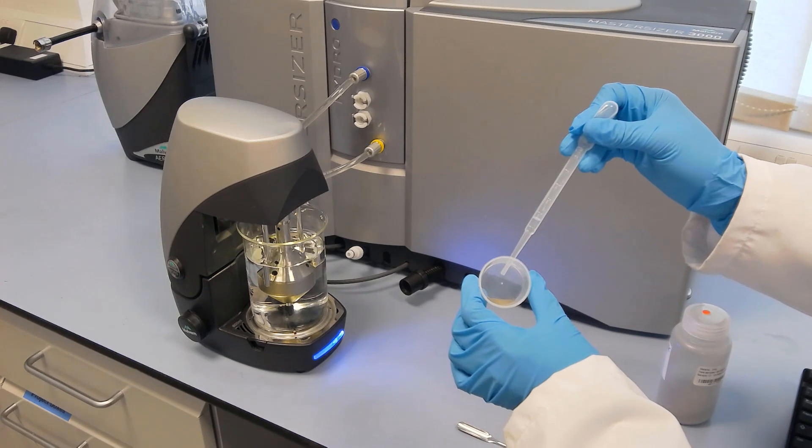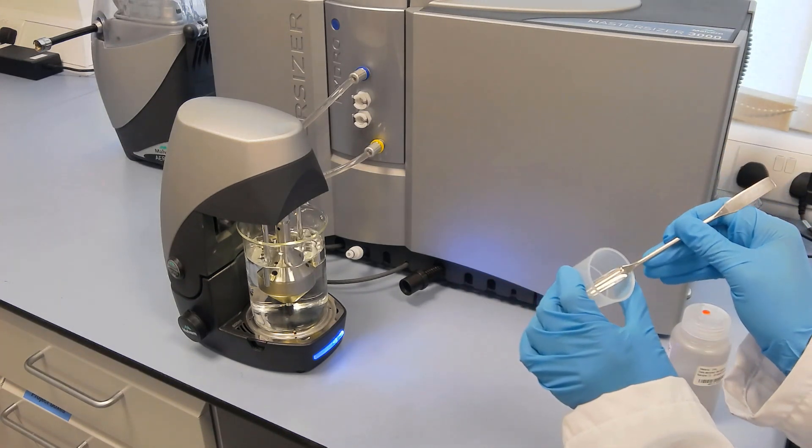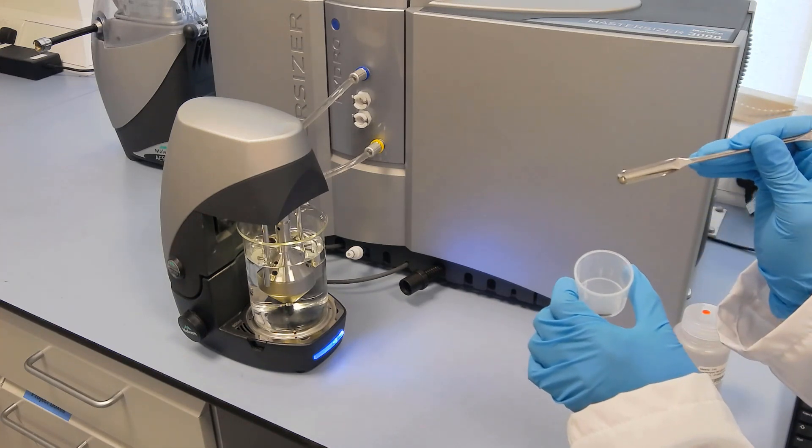For greater control, the metal powder can first be wet with a few drops of the dispersant, in this case water, which creates a paste-like preparation.